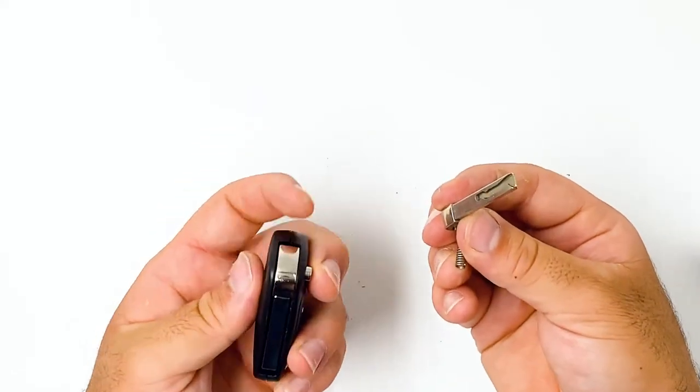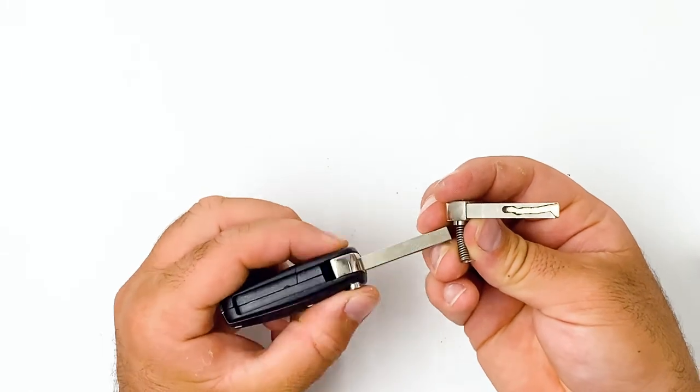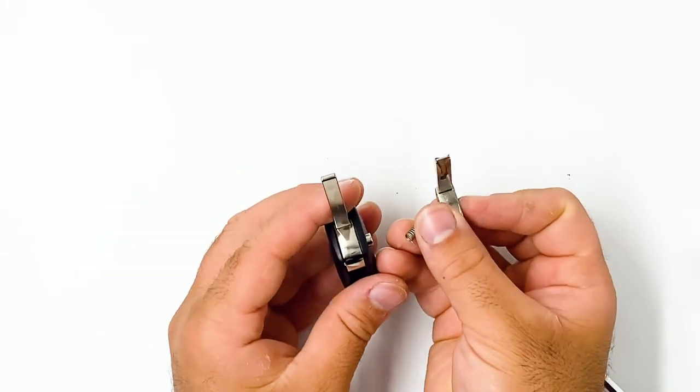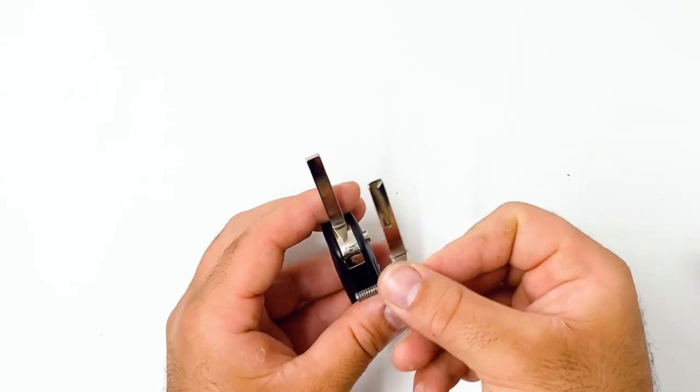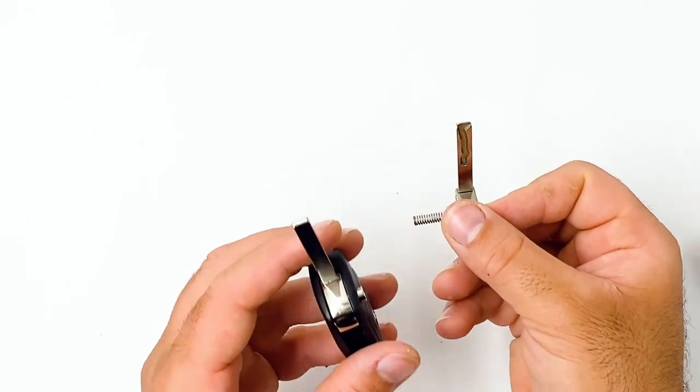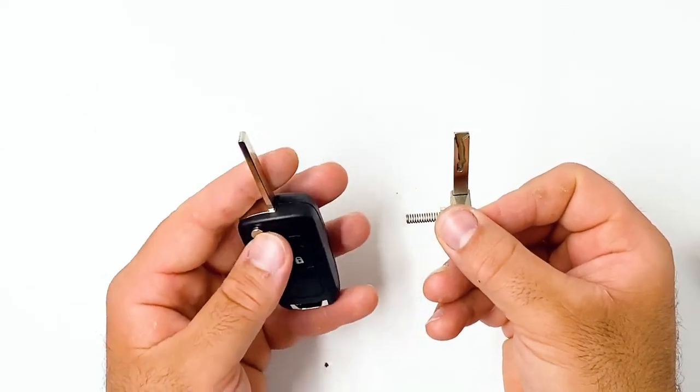Alrighty. Now make sure you keep this part so you can get it cut. Just take it to your local locksmith. They should be able to cut that for you. Sometimes you can put these in here. It is best just to get our one cut. It just works a little bit better with our key.